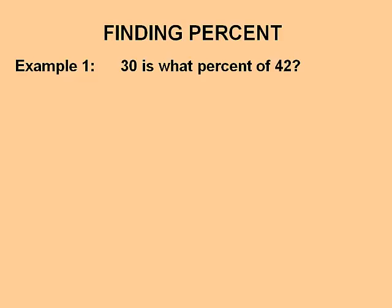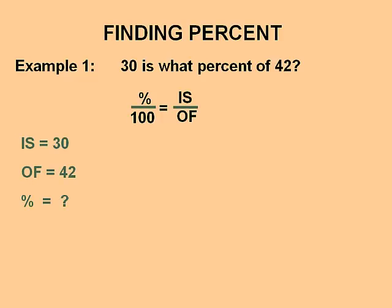In this first example: 30 is what percent of 42? We are looking to solve for percent. We start with our equivalent fractions: percent over 100 equals is over of. 30 is the number associated with the word 'is,' and 42 is the number associated with the word 'of.' Let's replace these numbers into our equivalent fractions. See if you can estimate what number would replace the percent sign to make some number over 100 equal to 30 over 42.